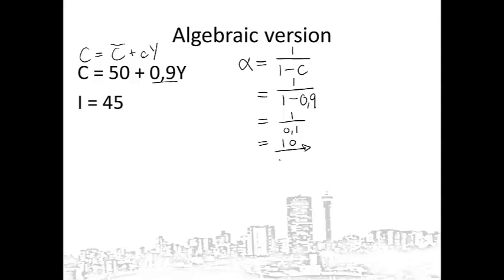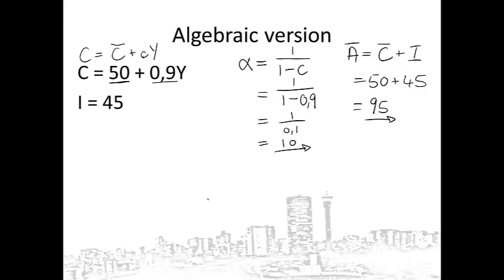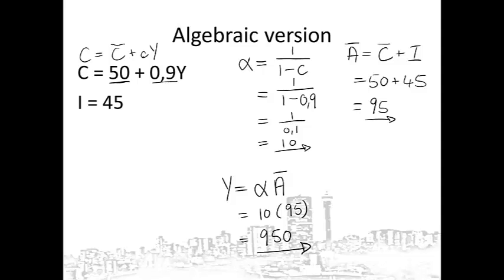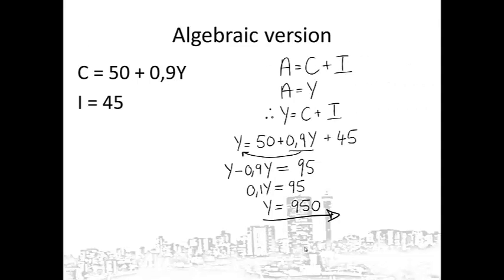Simplifying, 1 over 0.1 equals 10. Now I calculate my autonomous expenditure, which equals autonomous consumption plus investment. From the consumption function, 50 is autonomous consumption and 45 is investment, giving 95. The equilibrium level of income is the multiplier times autonomous expenditure, which is 10 times 95, giving an answer of 950. You can see I got the same answer with both methods — they are just different ways to get the same answer.